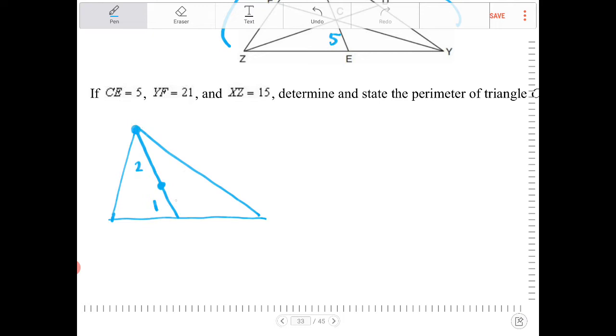So whatever this distance is over here, if I'm calling that X, then the distance going from the centroid to the vertex is going to be 2X. And it doesn't matter which way you look at it. If we're going in this direction, this will be Y, and then this will be 2Y. And then going in the other direction, this would be 2Z, and this would be Z.